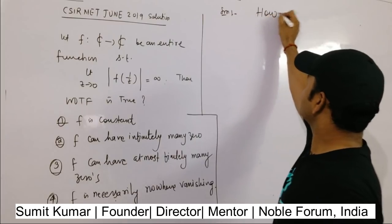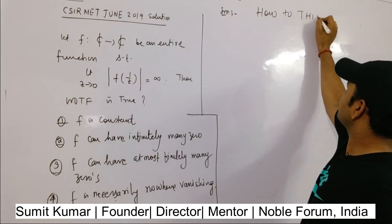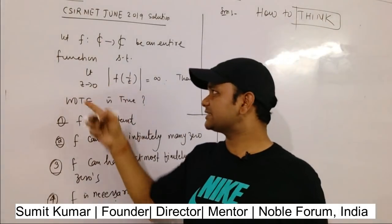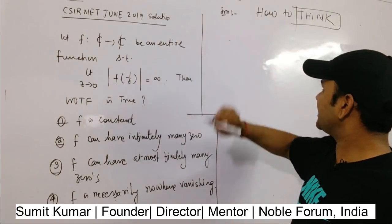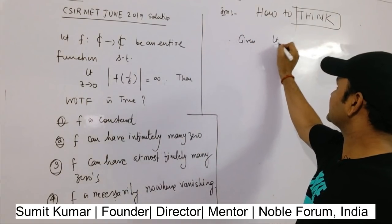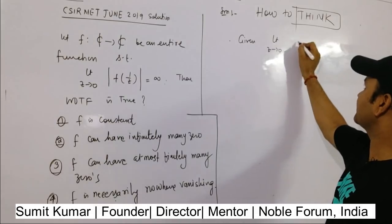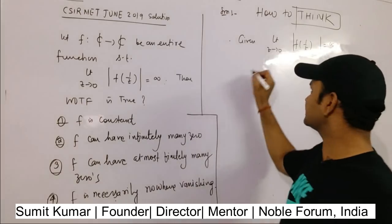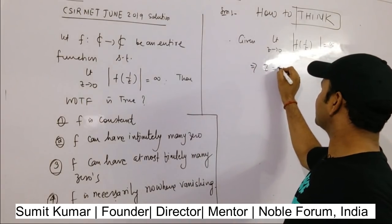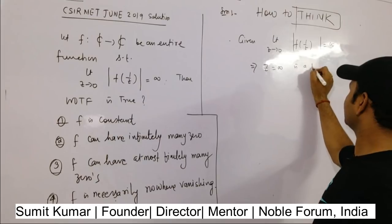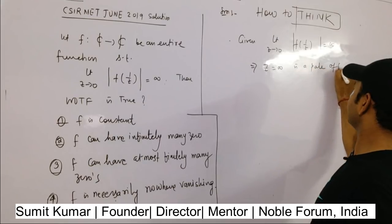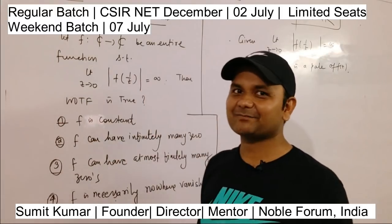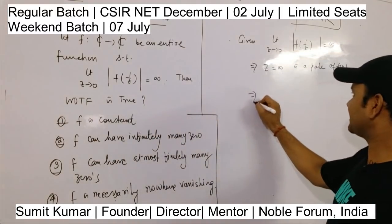How to approach this kind of problem? Given that the limit as z→0 of |f(1/z)| = ∞, this means z = ∞ is a pole of f(z). For any entire function, if z = ∞ is a pole, that means f is a polynomial.